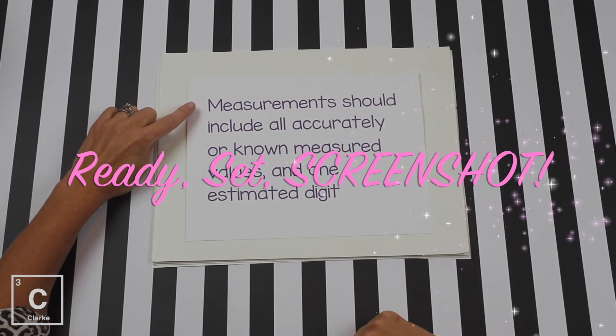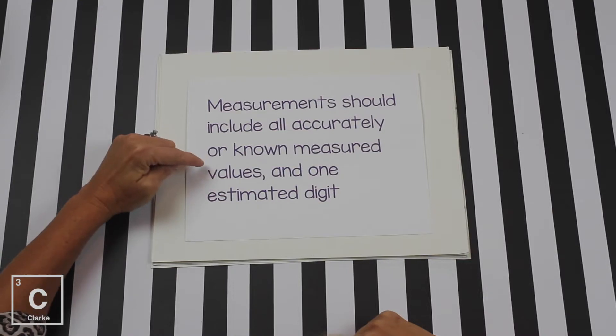Measurements should include all accurately or known measured values in one estimated digit. Now what that means is we're going to take our piece of equipment, whatever it may be, and you know all equipment has those little measure lines on it. You need to measure using all of those lines that are possibly available to you. And then after that, estimate one more digit. Let's try that.